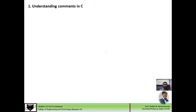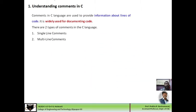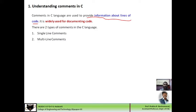Let us first understand what is meant by C comments. Comments in a C program are used for providing information about lines of the code and are widely used for documenting the code. If you want to give a description of the instructions written in a C program, those are given with the help of comments. For whichever lines you put a comment, those lines will not be considered during program execution. There are two types of comments in a C program.